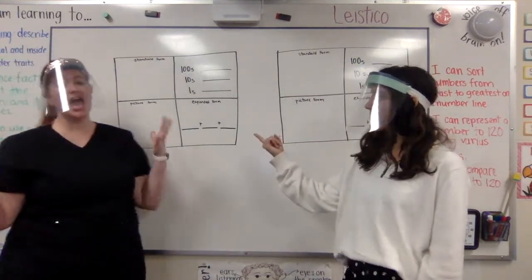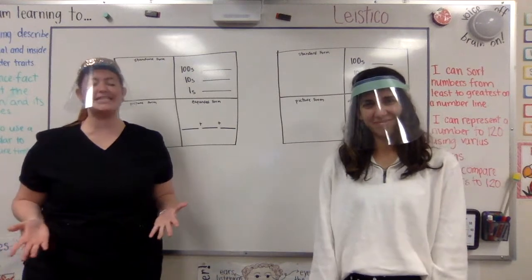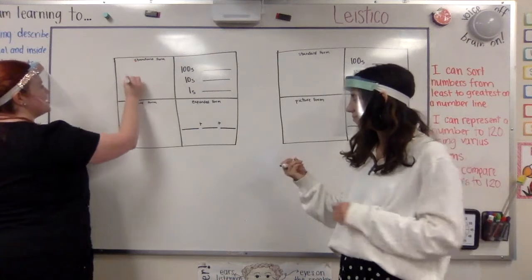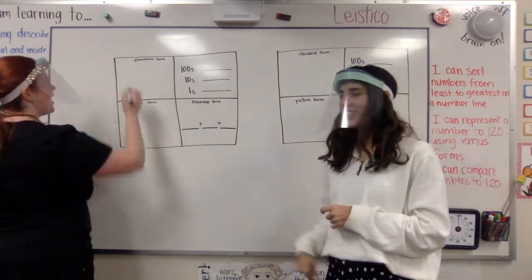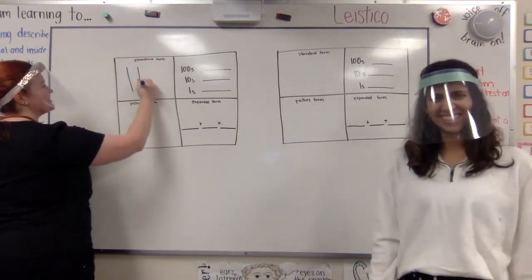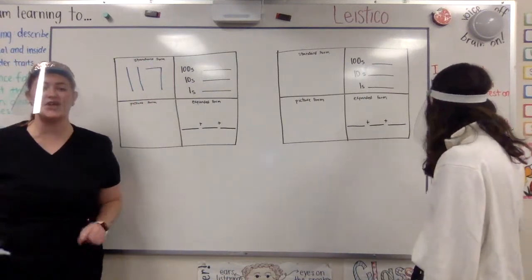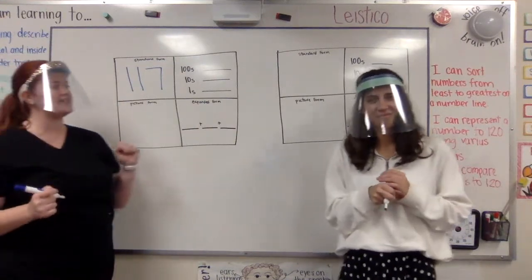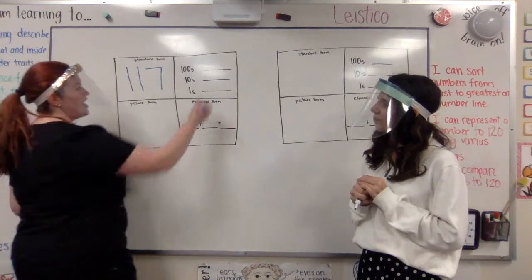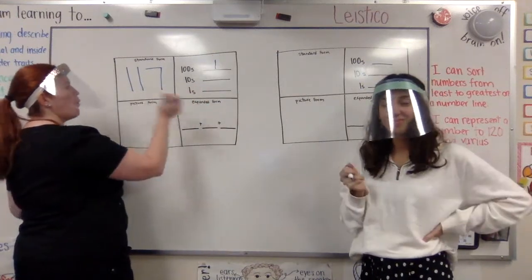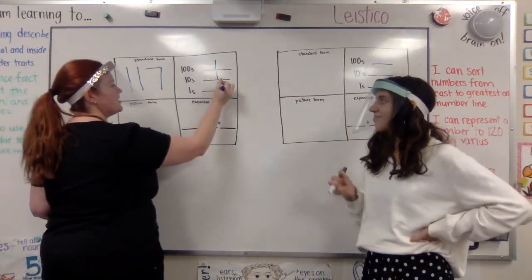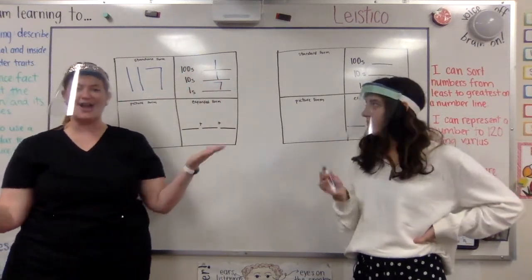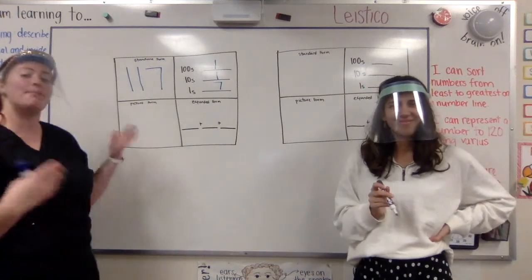I'm going to start by picking a number and representing it in all of its forms. So I'm going to pick the number 117. This is my standard form. That's how the number would normally look. So I have 117. If I look at this number, it has 1 hundred, 1 ten, and 7 ones.